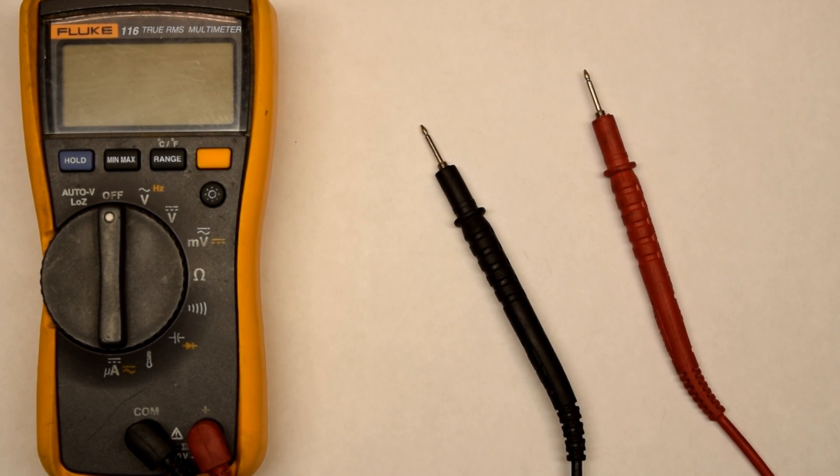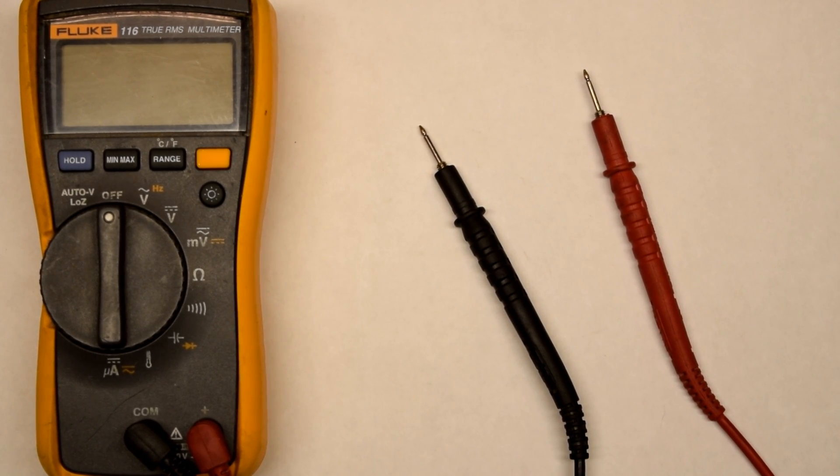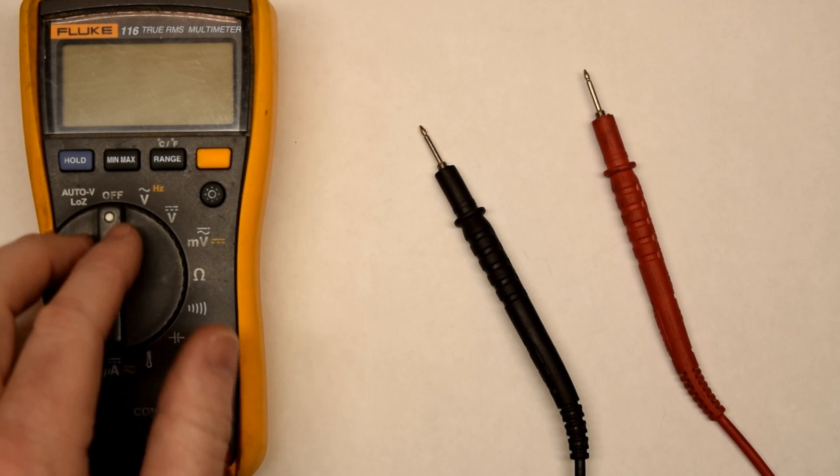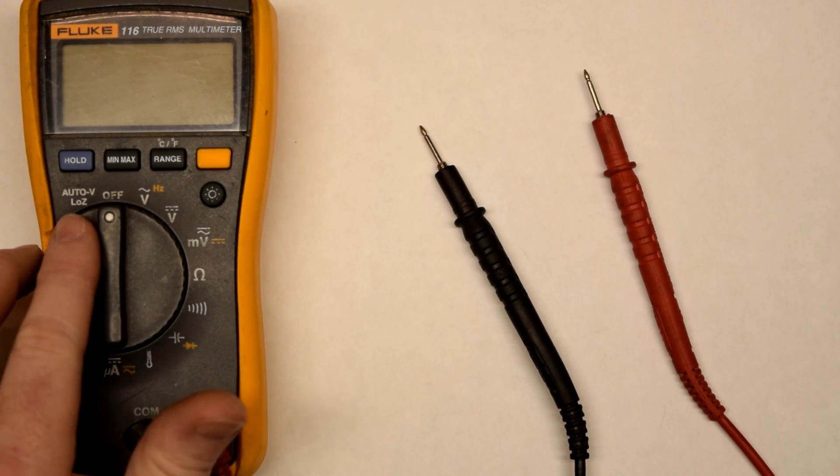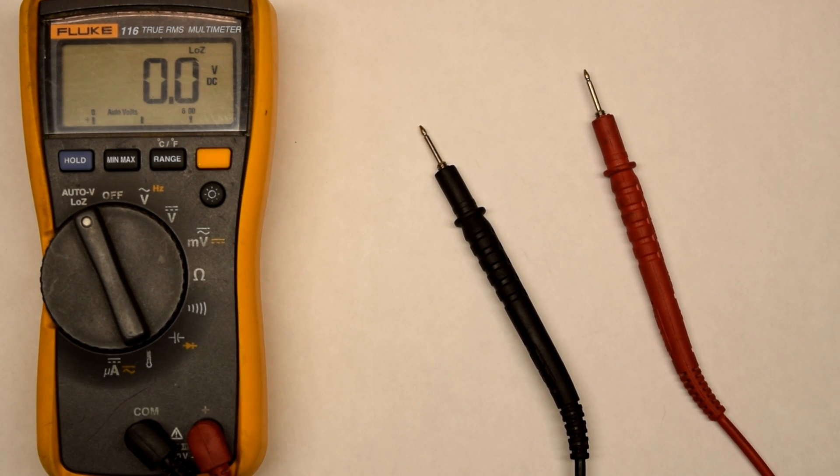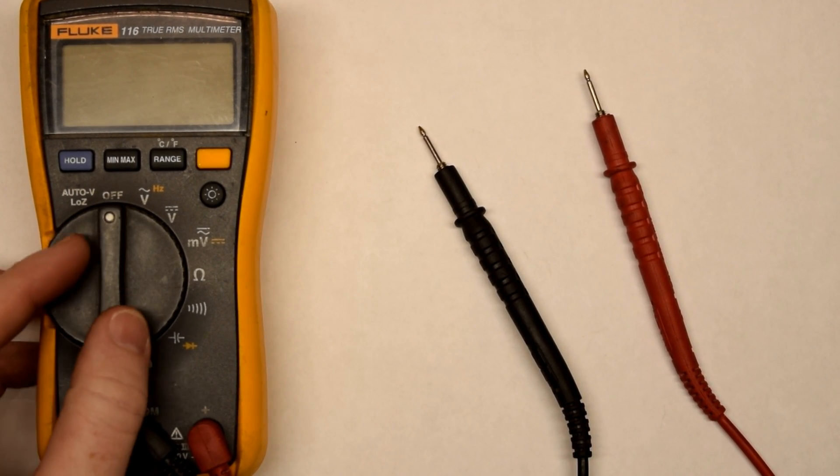We'll talk about AC voltage, which is alternating current, and also DC voltage, which is direct current. Now my meter may or may not look like yours, but mine has an auto voltage feature, which is really nice. It will auto detect between direct current and alternating current. If you do not have that feature, not a problem.